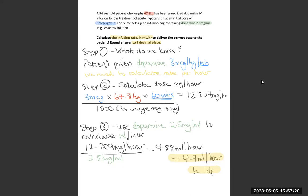With these types of questions, if we are calculating an infusion rate in millilitres per hour and our dose is per minute, we should know straight away that we need to times this by 60 to get per hour. So let's have a look at step two.